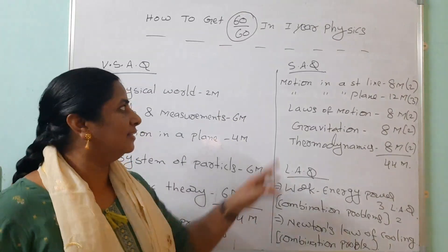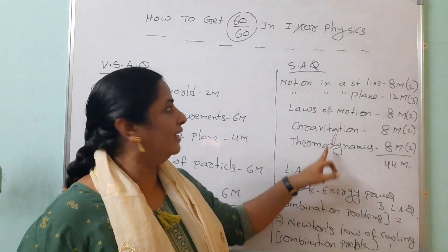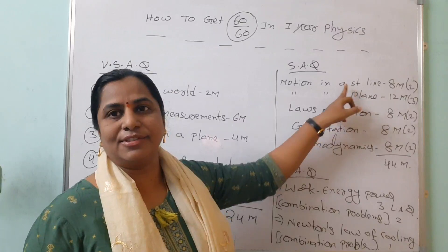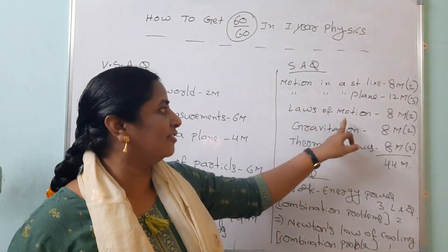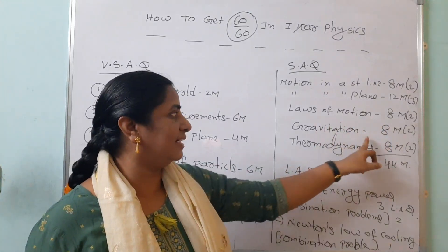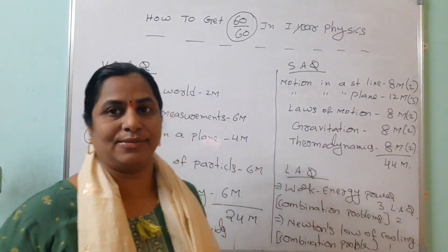Short answer questions: look here - motion in a straight line, 2 SAQs; motion in a plane, don't leave this chapter, 3 VSAQs; laws of motion, 2 SAQs; gravitation, 2 SAQs; and thermodynamics, 2 SAQs.